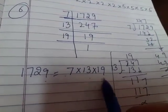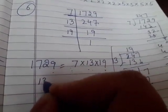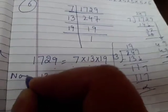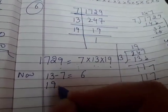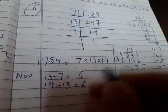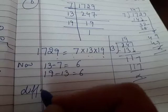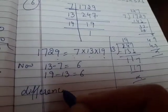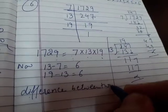19-13=6. So the difference between two consecutive prime factors is the same. The difference between two consecutive prime factors is the same.